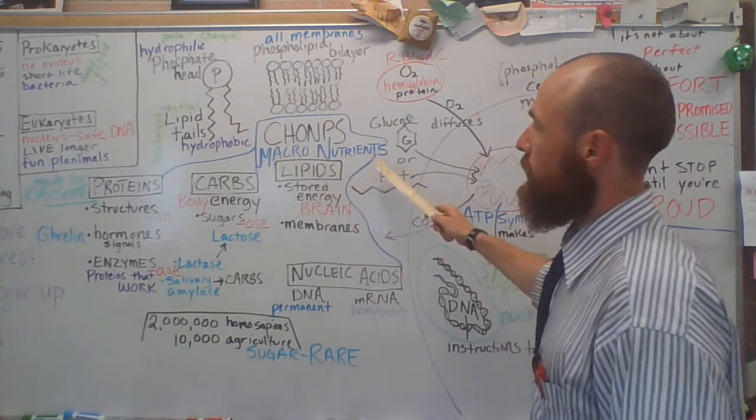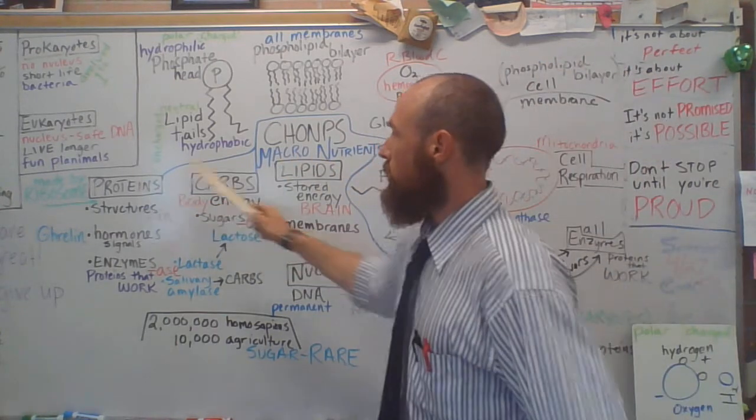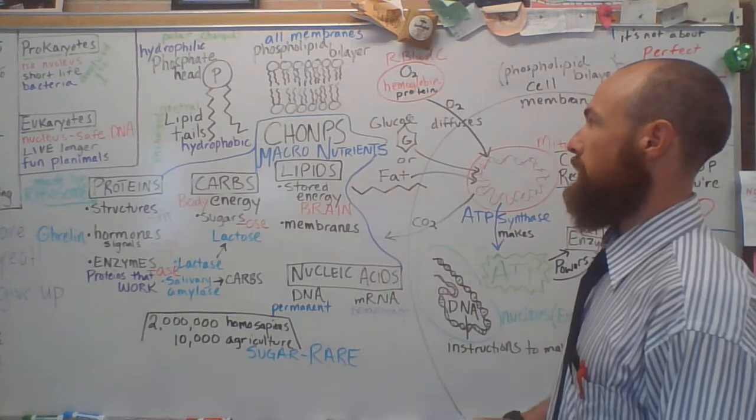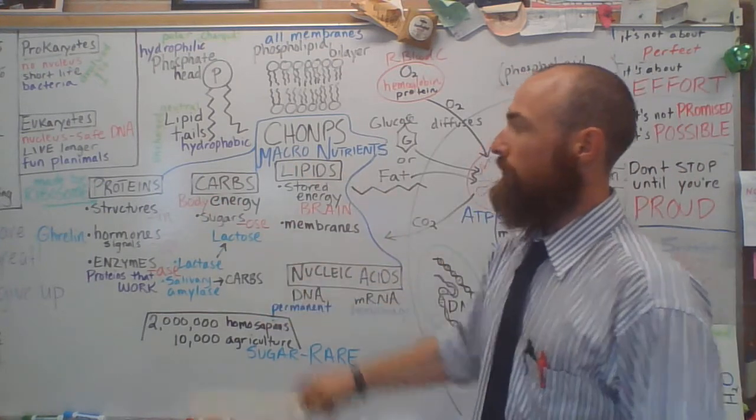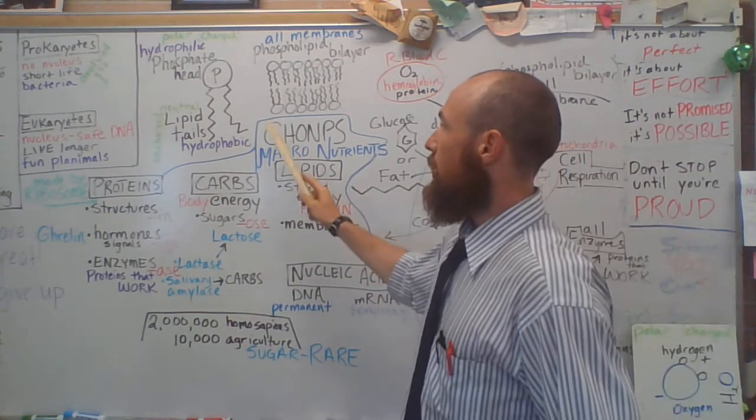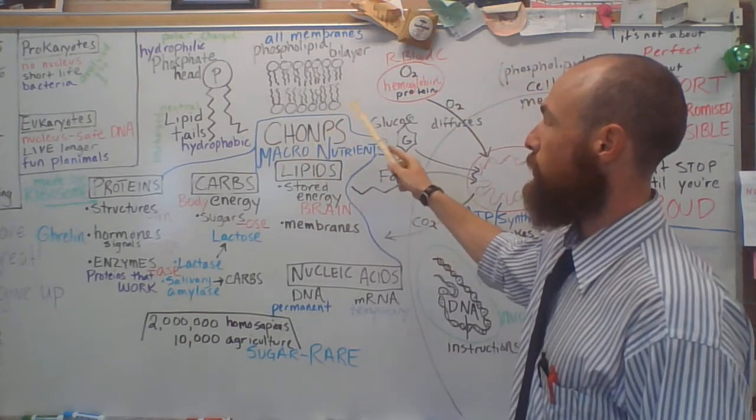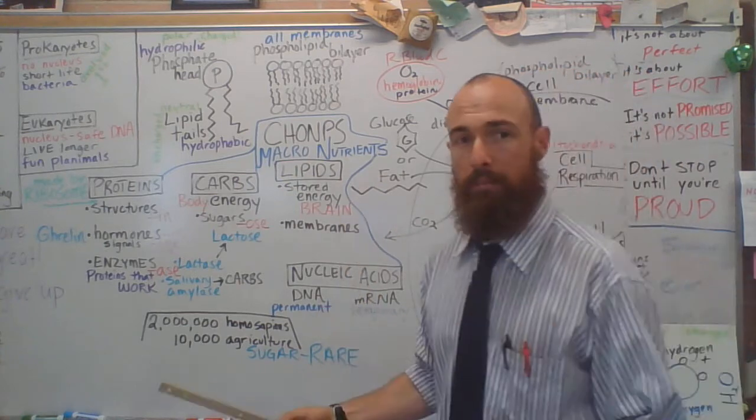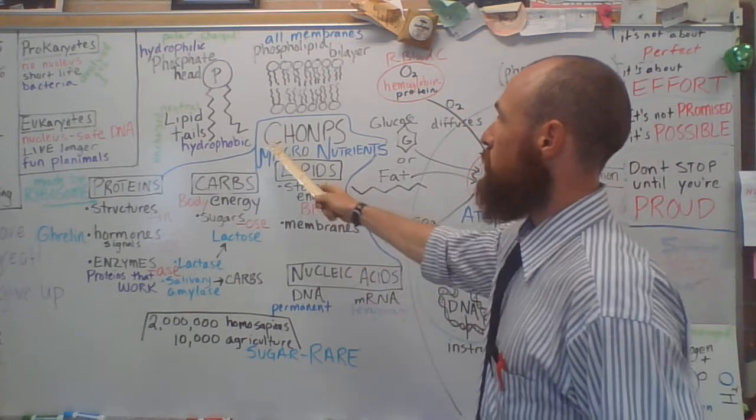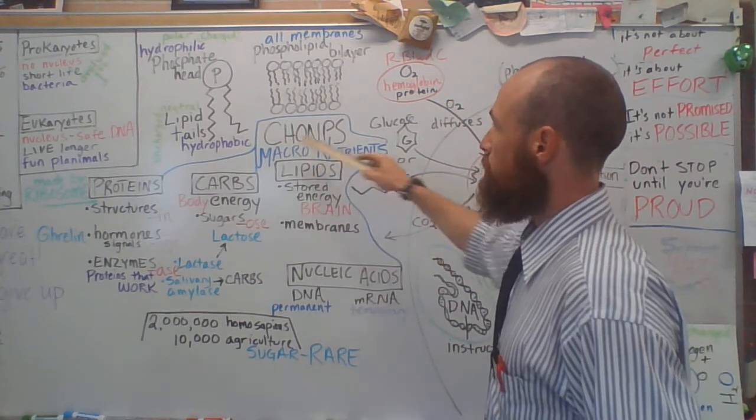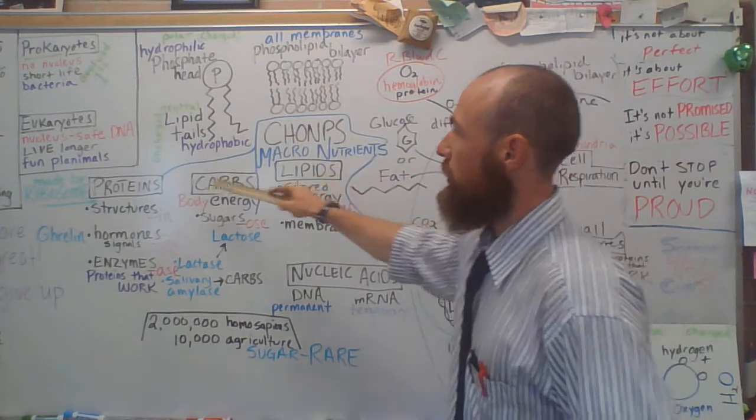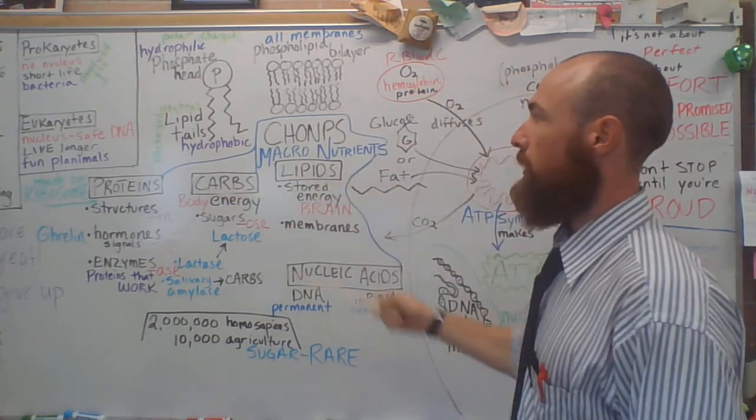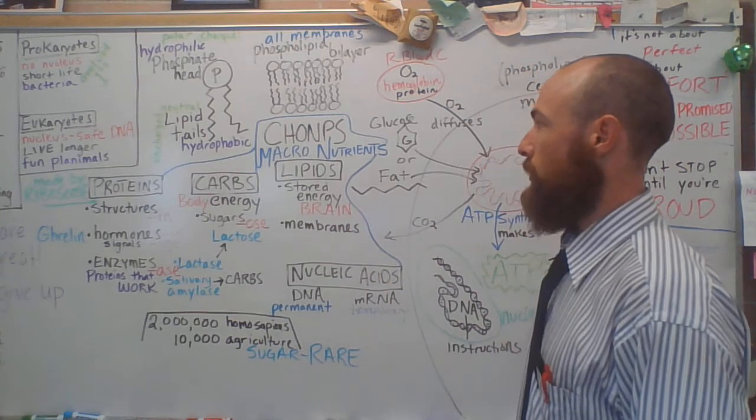So our macronutrients, there are four: proteins, carbs, lipids, nucleic acids, and they are all made up of the top six elements, carbon, hydrogen, oxygen, nitrogen, phosphorus, and sulfur. These are called CHOMPS. You can't pronounce it, but it's a great way to remember it. These CHOMPS, top six elements are rearranged in different ways to make up the different macromolecule categories.